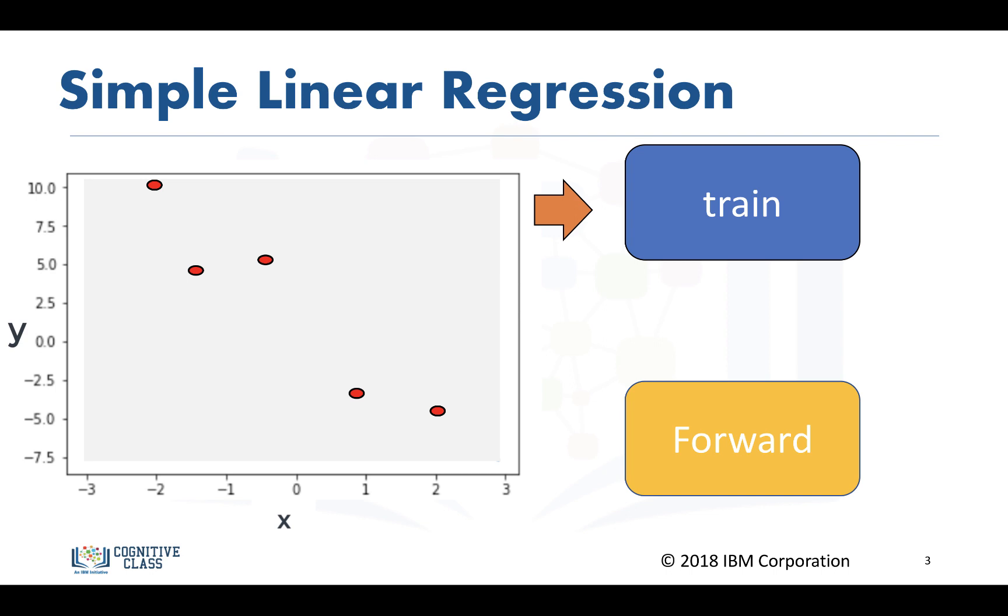For the case of linear regression, we're going to get a set of parameters: the bias and slope term. We'll make a prediction, and in PyTorch this is called the forward step. We obtain the equation of the line and can make a prediction for any of the x values.